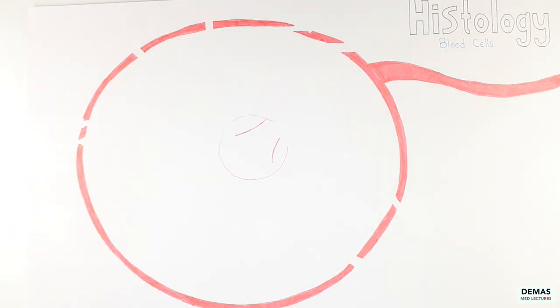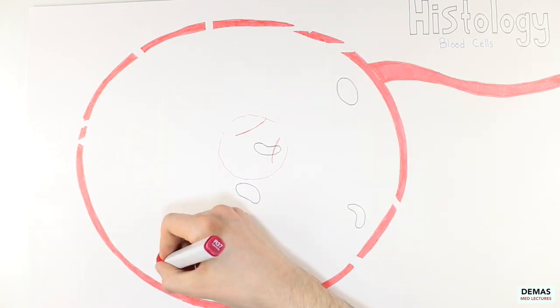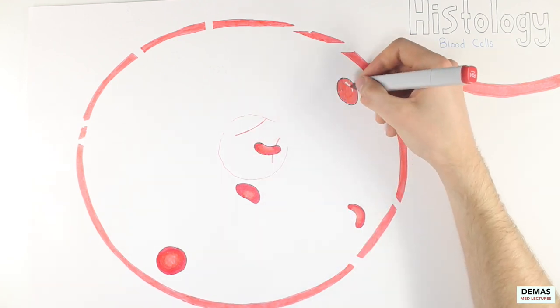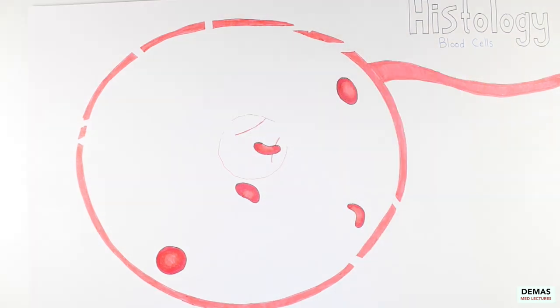However, pay close attention to the location of the cells found outside the vessels, since the blood cells mentioned are not found in the same part of the body. To start off, I'm going to draw in some red blood cells here. They're probably the most recognizable and most defining feature of the blood, so I figured I would start here.